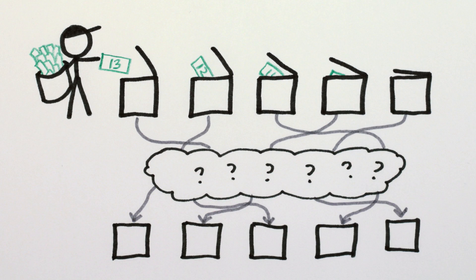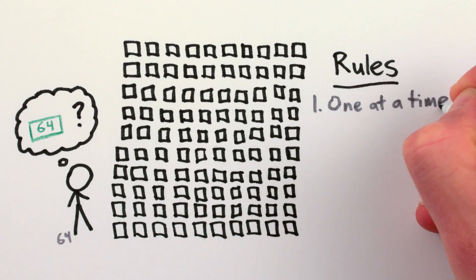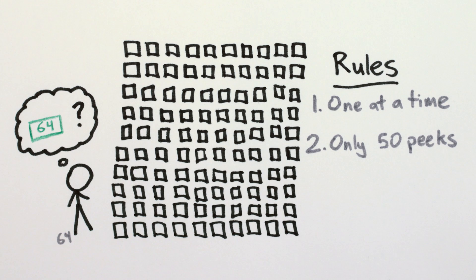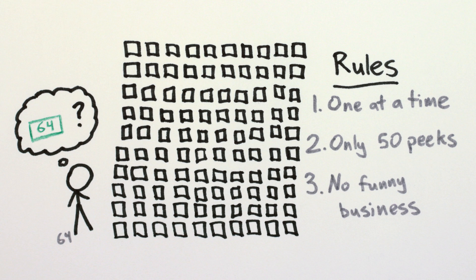The game is this. Each of you come into the room and try to find which box your bill is in. But you're only allowed to come in one at a time, you're only allowed to peek in half or 50 of the boxes, and you aren't allowed to change anything about the boxes or move bills around.